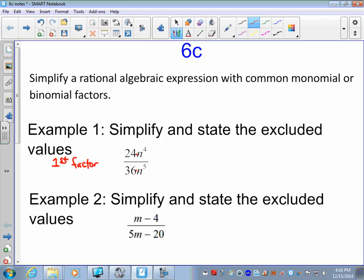Second step, get your excluded values. Now, excluded values are what will make the denominator 0. In this case, the only number that will make the denominator 0 is if n were to equal 0. You put 0 in for n in the denominator, and the denominator becomes 0. 0 to the 5th is 0, times 36 is 0. You cannot divide by 0 in math, so this is our excluded value. We're going to say n cannot equal 0.